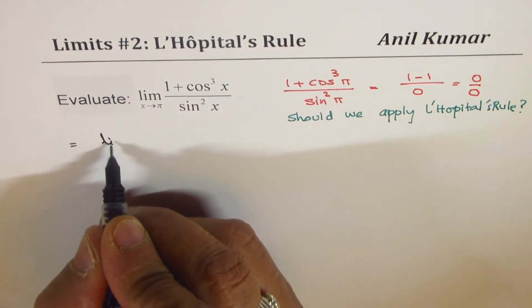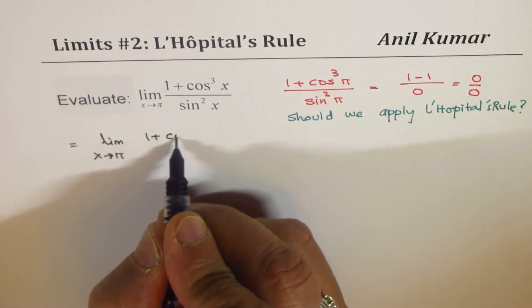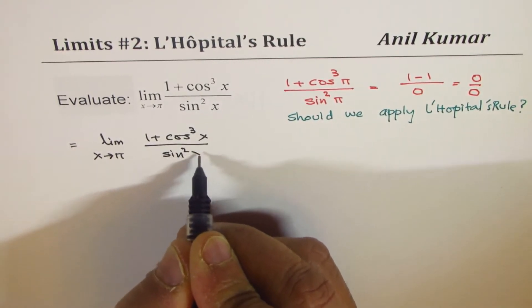So let's rewrite this question: limit as x approaches π of (1 + cos³x) / sin²x.